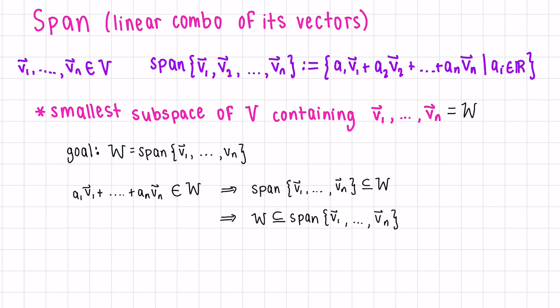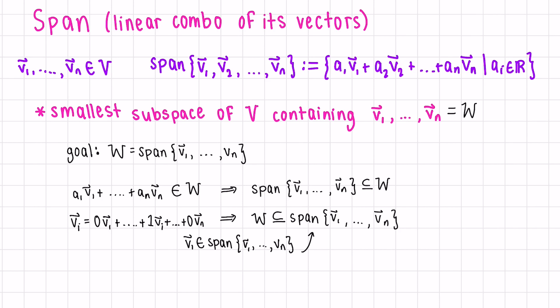Is it possible to show that W is included in this span? Because if we can write this, then we know that the equality is true. Well, W contains v1 all the way till vn, so can we write any element as a linear combination of v1 to vn? Yes. If we take vi, for example, we can write this as 0*v1 plus 0*v2 all the way till 1*vi. So we can conclude that vi is included in the span, and because we have inclusion in both directions, W equals span(v1, ..., vn).